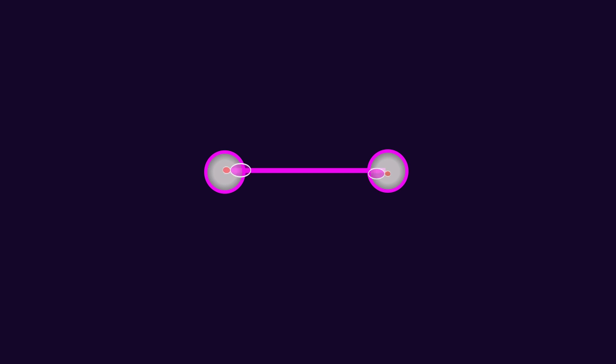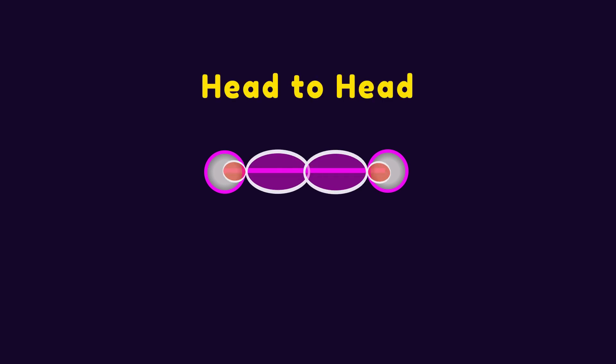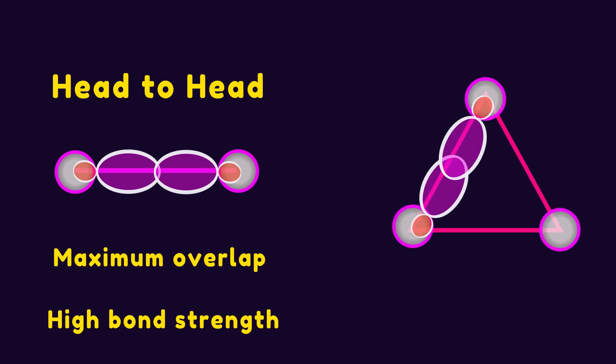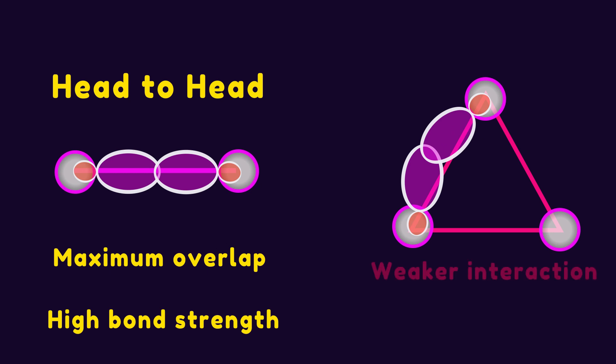Orbitals in a normal sigma bond have head-to-head interaction in which maximum overlap occurs. As a result, sigma bond remains unreactive due to high bond strength. In cyclopropane, because of the 60-degree bond angle, hybrid orbitals are forced to be bent. This unusual structure leads to a relatively weaker interaction.